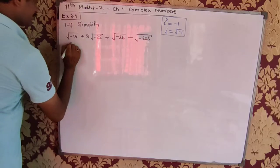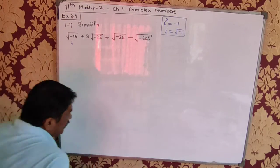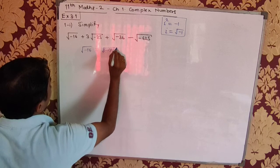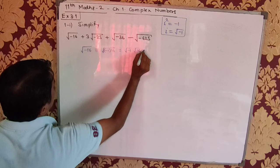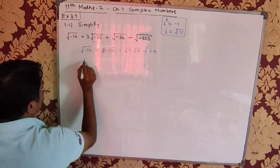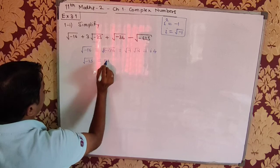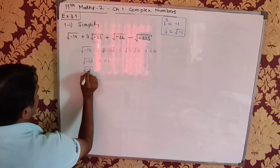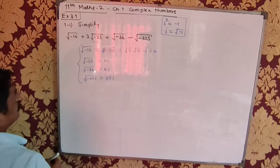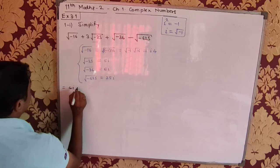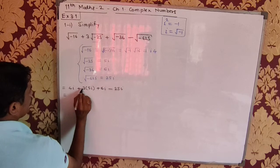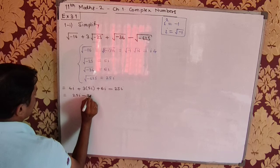How shall I split this? Well, √(−16) = √(−1 × 16) = √(−1) × √16 = i × 4 = 4i. Similarly, √(−25) = 5i, and √(−625) = 25i. Substituting all these values, we get: 4i + 3(5i) + 6i − 25i = 4i + 15i + 6i − 25i = 25i − 25i = 0.